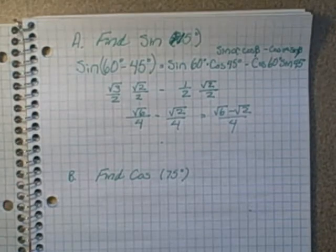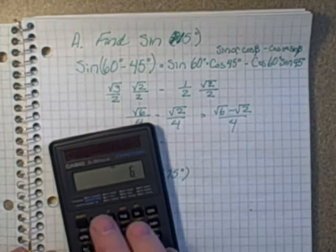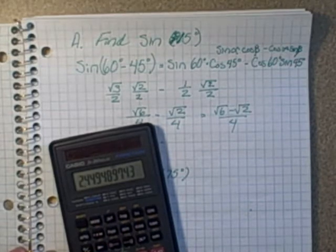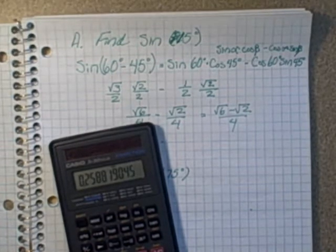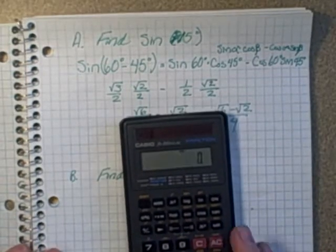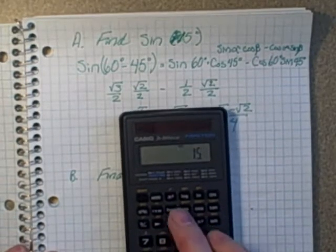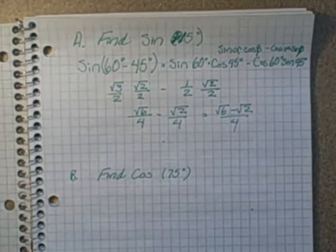We could check this on our calculator. We take the root of 6, subtract the root of 2, and divide by 4. We have 0.2588 in our check, and if we look at sine of 15, that's what it is.